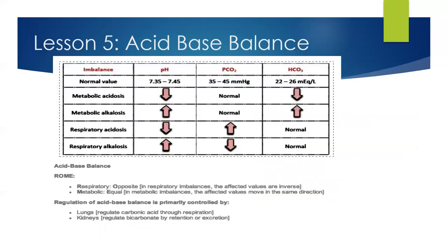Interpreting blood gases is important. This is a table you'll want to memorize — know your normal pHs, your normal PCO2s, and your normal HCO3s. Know those normal ranges so that when you are given a list of pHs, PCO2s, and HCO3s, you will know if they're high, low, or normal.